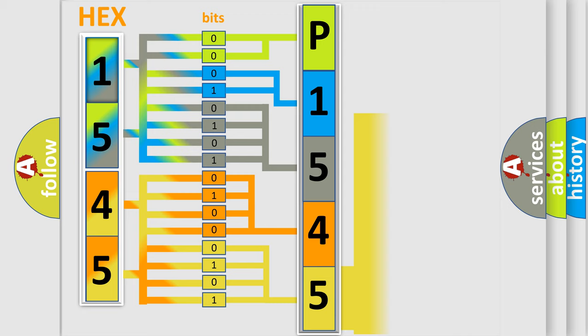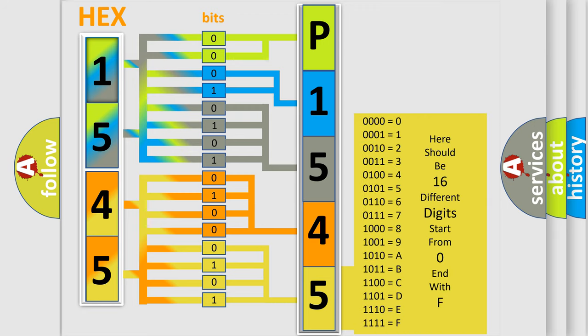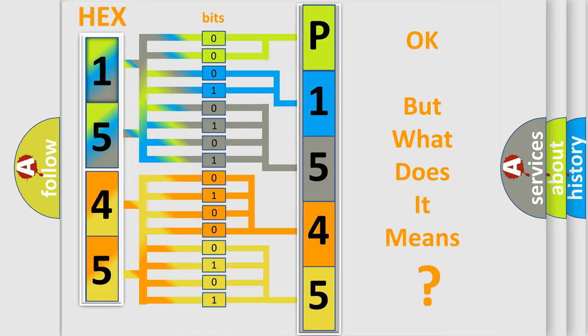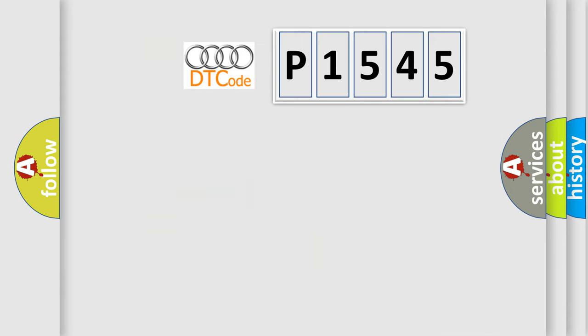A single byte conceals 256 possible combinations. We now know in what way the diagnostic tool translates the received information into a more comprehensible format. The number itself does not make sense to us if we cannot assign information about what it actually expresses. So, what does Diagnostic Trouble Code P1545 interpret specifically for Audi?